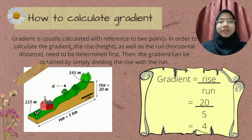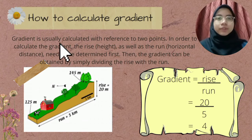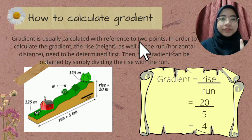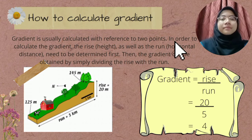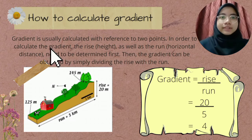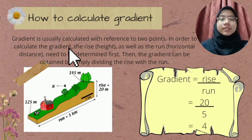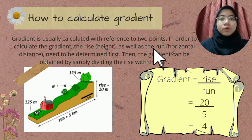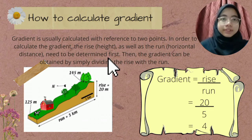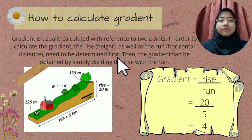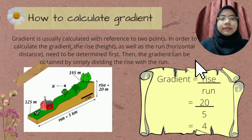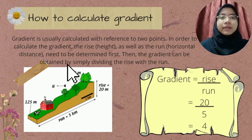How to calculate gradient? Gradient is usually calculated with reference to two points. In order to calculate the gradient, the rise — which is the height of the mountain — as well as the run — which is the horizontal distance of the mountain — need to be determined first. Then, the gradient can be obtained by simply dividing the rise by the run.